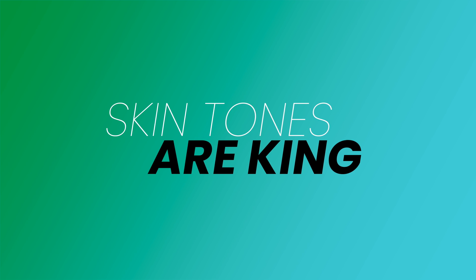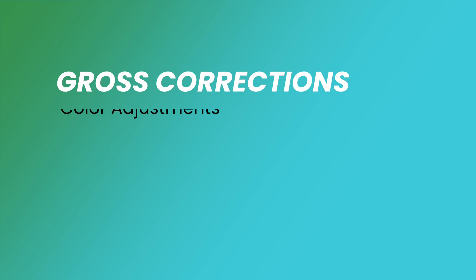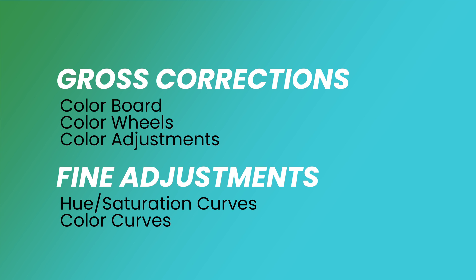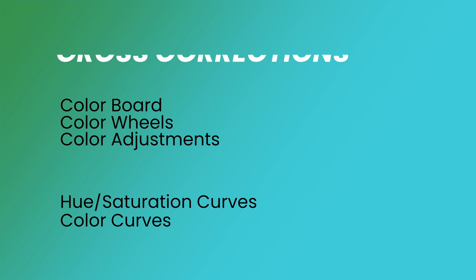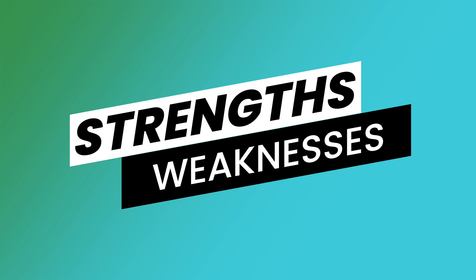Let's dive right into it. Here are some basic rules for color correcting. One, skin tones are king — I'm going to show you how to tell if you're in range on skin tones. Two, some of Final Cut's tools are great for gross edits in color correction, and some are better for fine-tune adjustments. And three, each color correction tool has strengths and weaknesses, and I'm going to point those out as we go along.